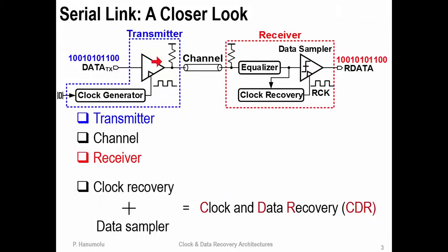Essentially, a serial link consists of a transmitter, channel, and a receiver. The transmitter is used to transmit the desired data across a channel. The function of the receiver is twofold: number one, it has to recover the clock from the incoming serial stream of data; and number two, it also has to sample the incoming data at an appropriate place to recover the data. The end goal is to recover the transmitted data without making any errors. This function of recovering the clock and sampling the data at the right time is referred to as clock and data recovery.